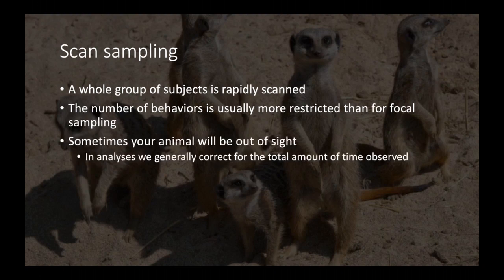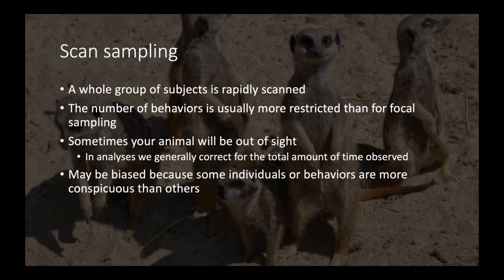Sometimes your animals will be out of sight, and that's fine. With scan sampling in particular, this may be biased because some individuals or behaviors may be more conspicuous than others. Since data collection relies on a human observer, if a couple of animals are engaging in a fight, we're probably going to be more drawn to them and see them quicker than other animals, so just keep that in mind with scan sampling.